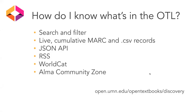In addition to having an overview of the subject areas, you can also use the search and filter functions on the library homepage. There are a variety of discovery methods, which include live cumulative MARC records, JSON API instructions, RSS feed, WorldCat, and the Alma Community Zone.